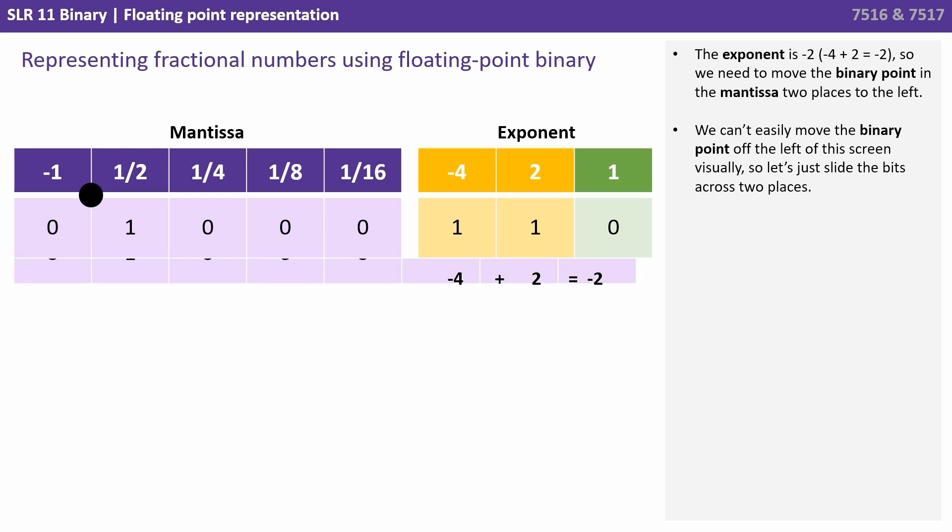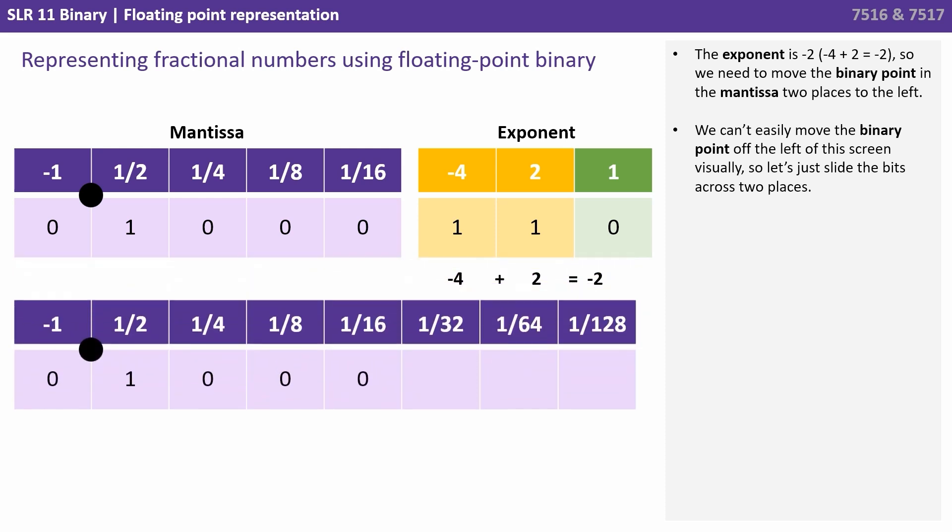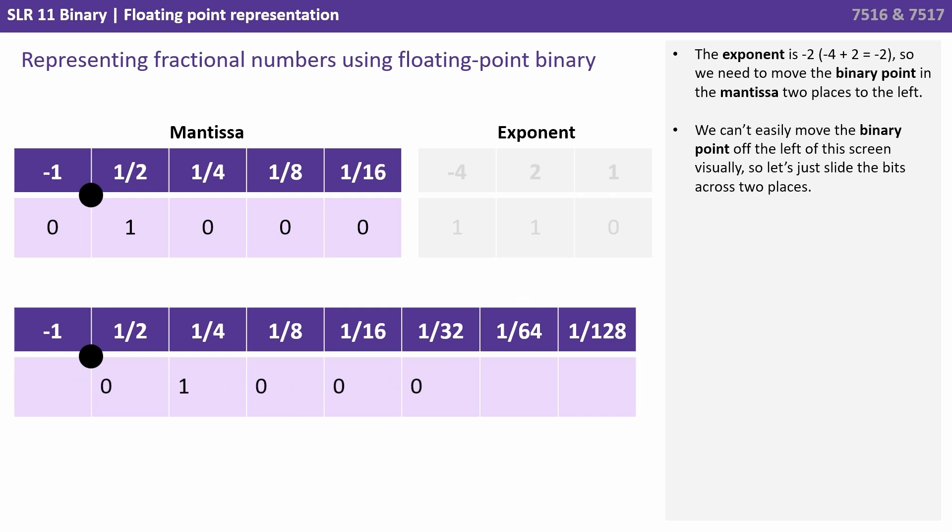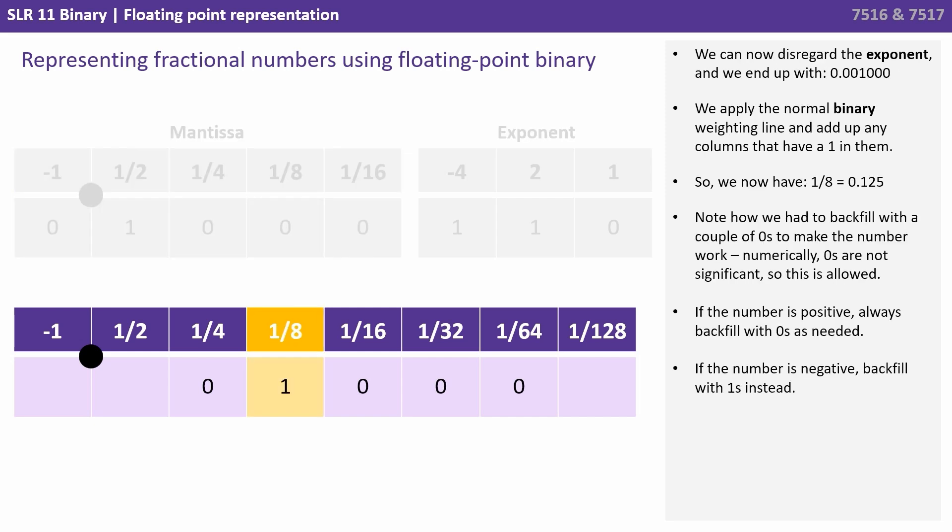Now we can't easily move the binary point off the left of our screen visually, so we're simply going to slide the bits across two places. We can now disregard the exponent and we end up with 0.001, 0, 0.